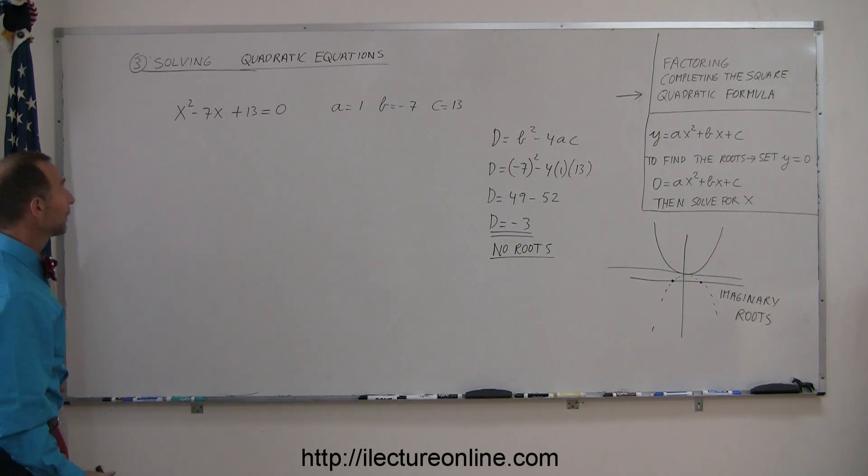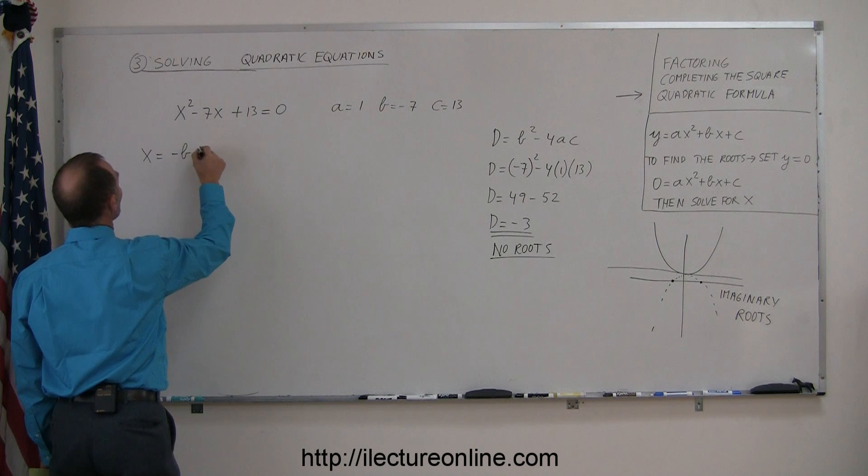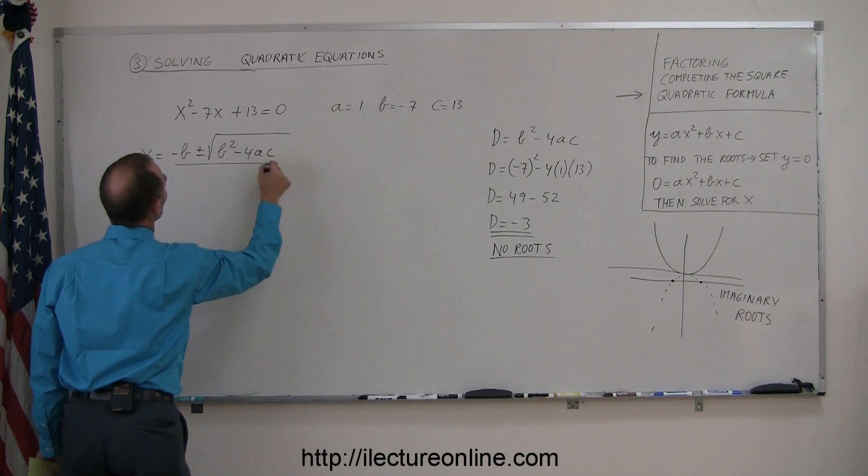Let's find it using the quadratic formula. And again, that means that x must equal minus b plus or minus the square root of b squared minus 4ac all over 2a.